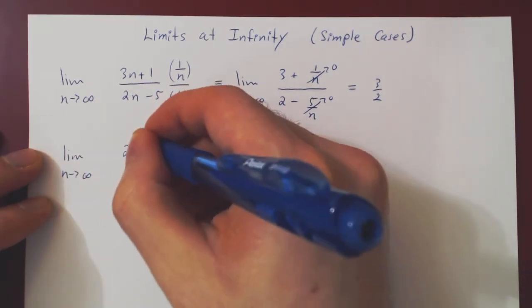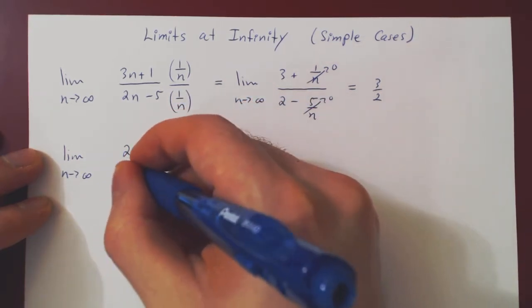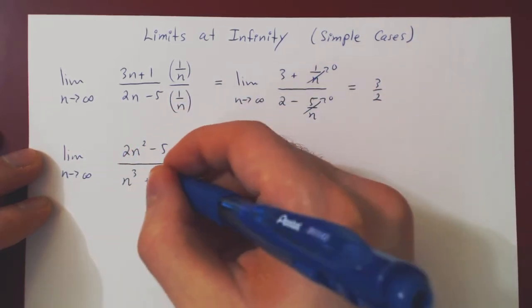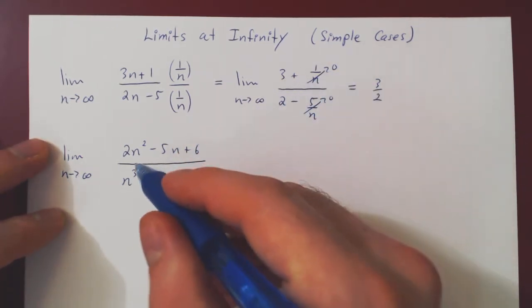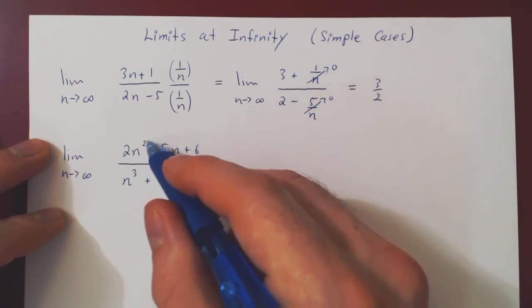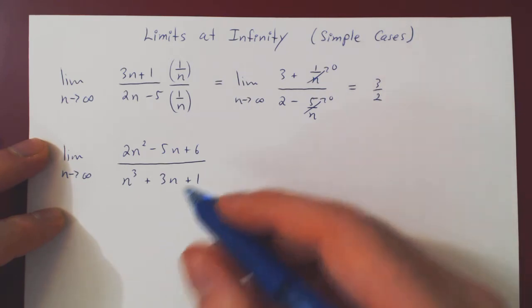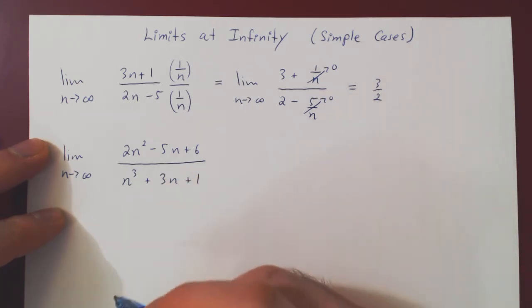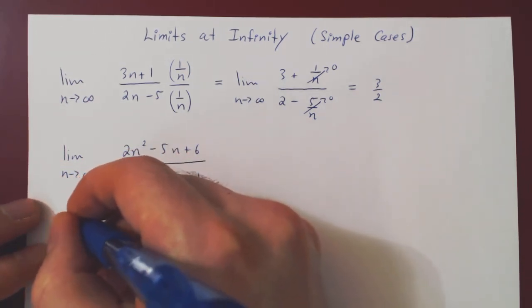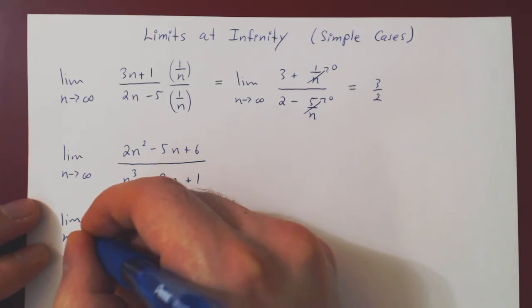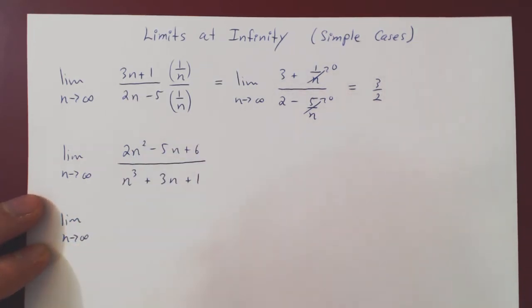Suppose we have 2n squared minus 5n plus 6 over n cubed plus 3n plus 1. Now here, if you notice, there is a dilemma. The largest power of n on top is 2n squared, on the bottom is n cubed. So which one do we use? Do we do 1 over n squared over itself or 1 over n cubed over itself? The answer is it doesn't matter. And let's do both simultaneously to show you that it never matters. As long as you either single out the greatest power of n on top or on the bottom, you'll be good to go.